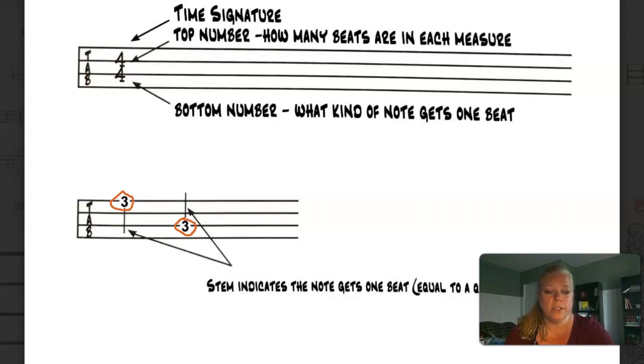If we were going to look at a note that meant that you would hold it for a whole note's worth of time, there would not be a stem, there would just be a circle around it. So you will also see that some places will put things like rests in as well. Don't get confused. Make sure you're looking at it.